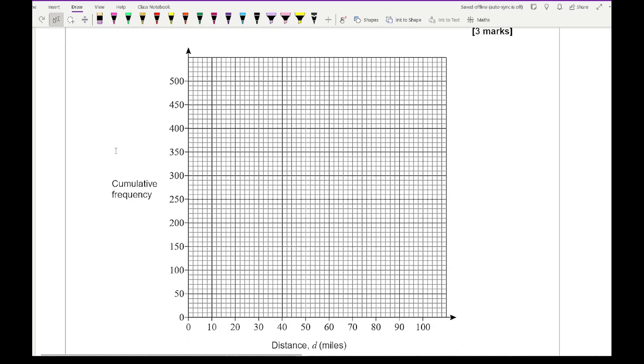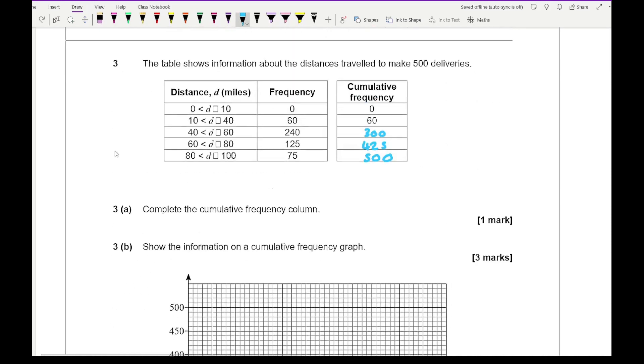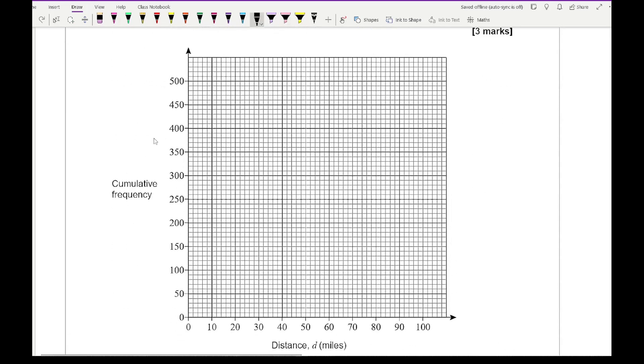We need to show the information on the cumulative frequency diagram. What you need to do is plot the cumulative frequency to the upper values, so I'm plotting each of these numbers against those highlighted values. In terms of plotting, at 10 I'm going to plot it at zero, and then at 40 which is the next one it's going to be at 60.